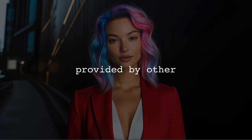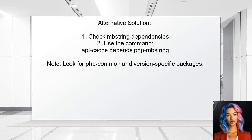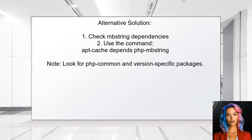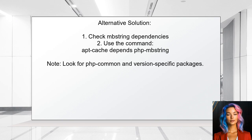Let's look at an alternative solution suggested by other users. On Ubuntu, the PHP mbstring package may depend on PHP common and a version-specific mbstring package, like PHP 7.1-mbstring. To verify these dependencies, you can use the command apt-cache depends php-mbstring.